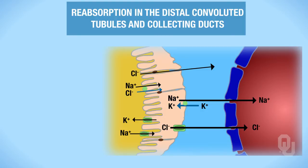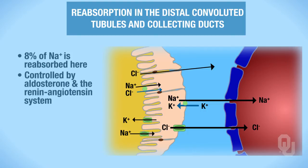So in terms of sodium, about 8% of your sodium is actually getting reabsorbed in these places. Remember that it's controlled. Sodium reabsorption is controlled by aldosterone, and it's also controlled by the renin-angiotensin system, which can cause aldosterone release.